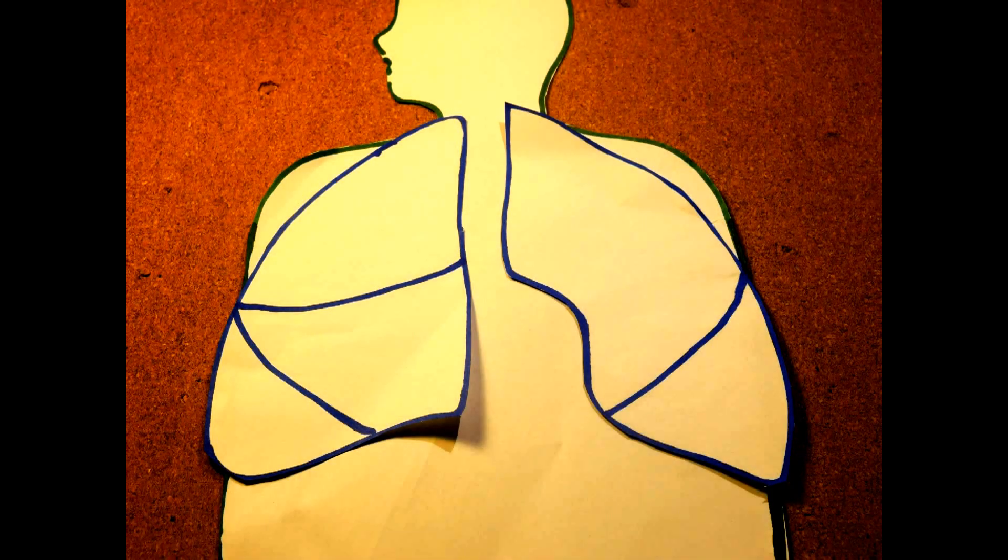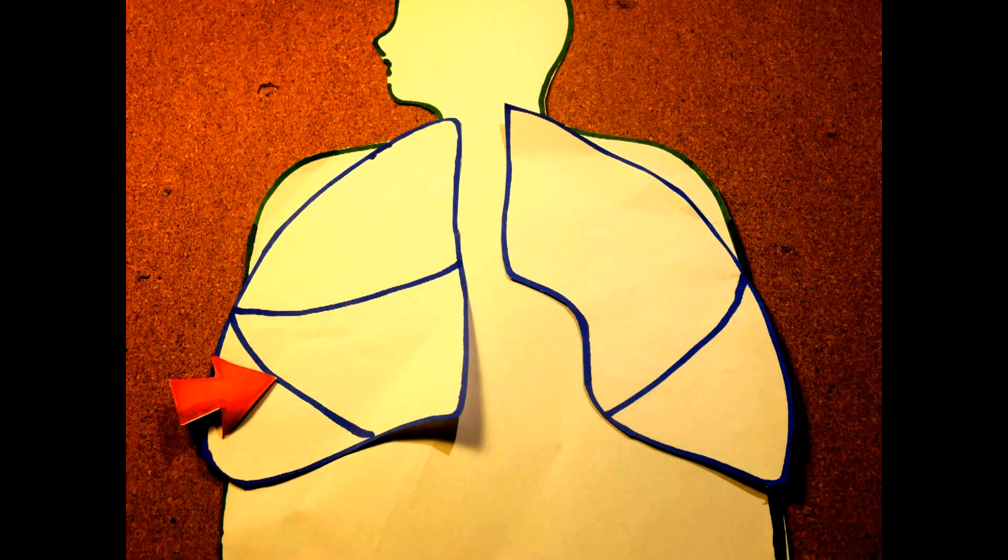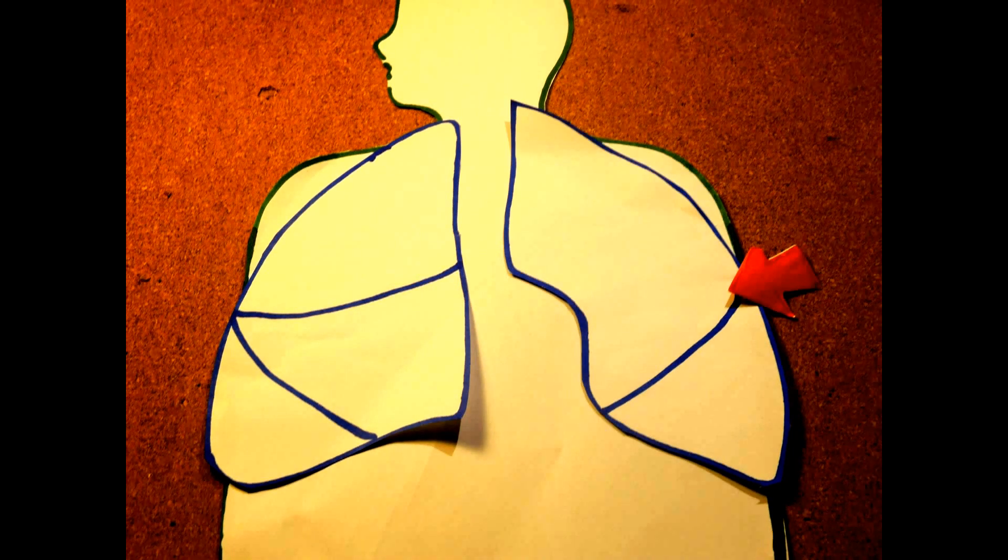So enough of that. Now let's go deeper and cover up some more basics about the lungs. Here is the horizontal fissure, which divides the upper and middle lobes, and this is the oblique fissure, which divides the middle and lower lobes. However, the left lung only has the oblique fissure, which divides between the upper and the lower only.